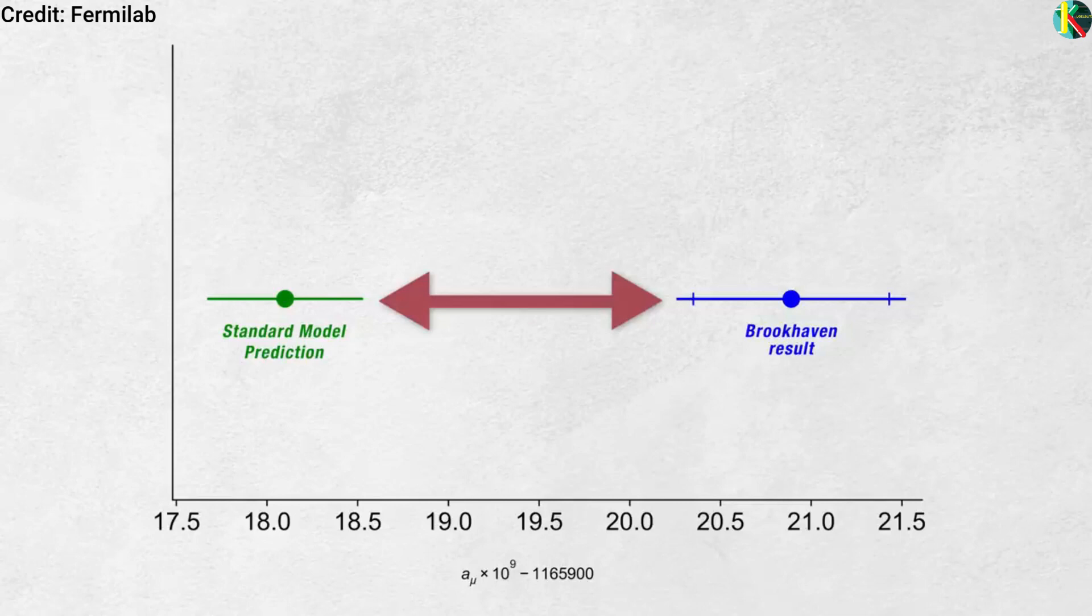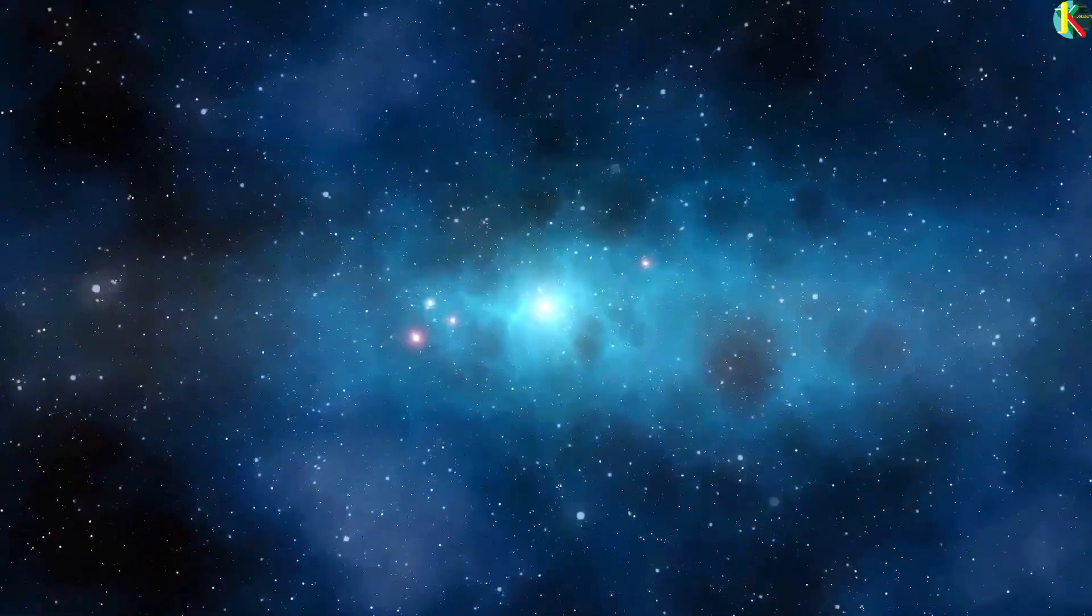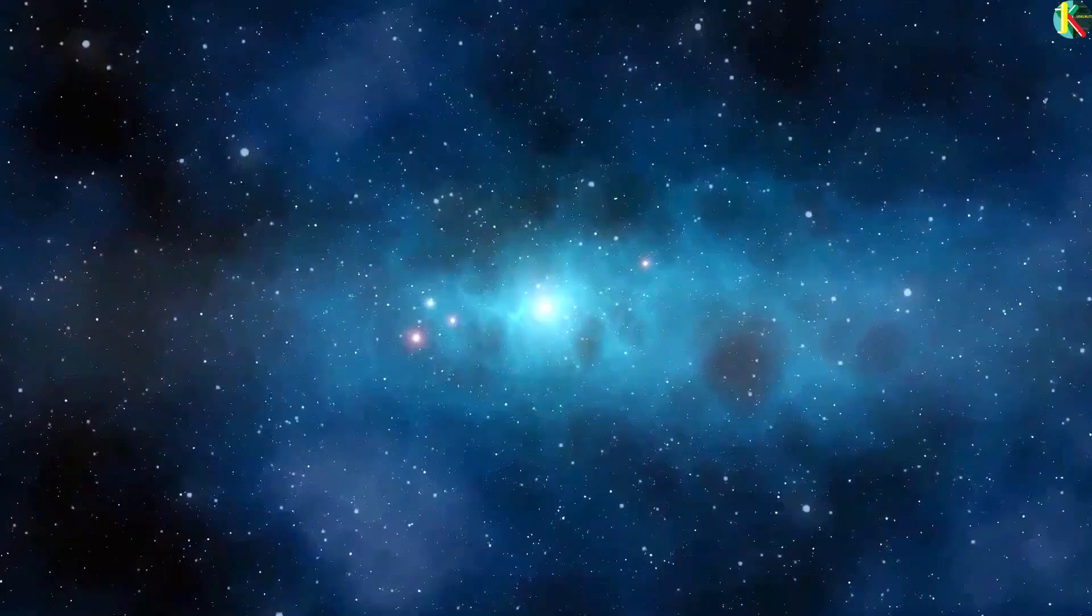There's roughly 1 in 10,000 chance that random fluctuations could lead to that degree of difference. Physicists however prefer a 5 sigma signal before declaring a discovery.